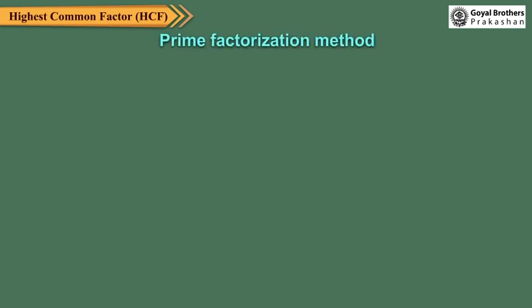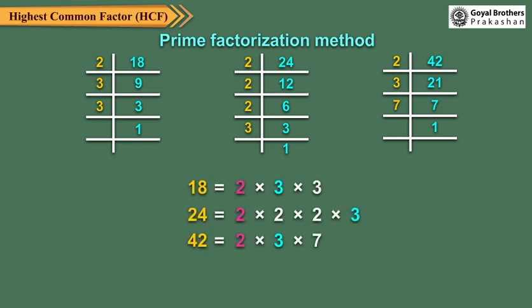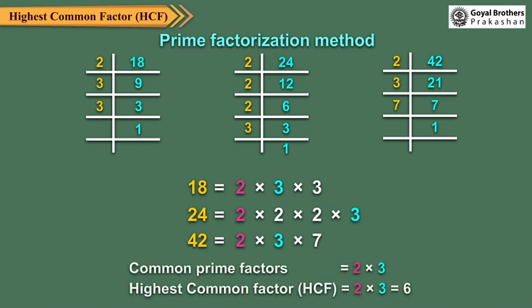Let us now find the HCF of 18, 24 and 42 by the prime factorization method. In this method, we find the prime factorization of each number, then identify the prime factors common to all, and find the product of the common factors.